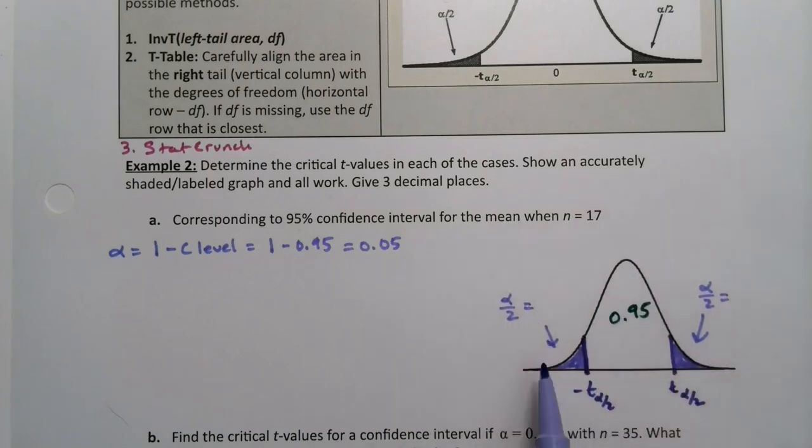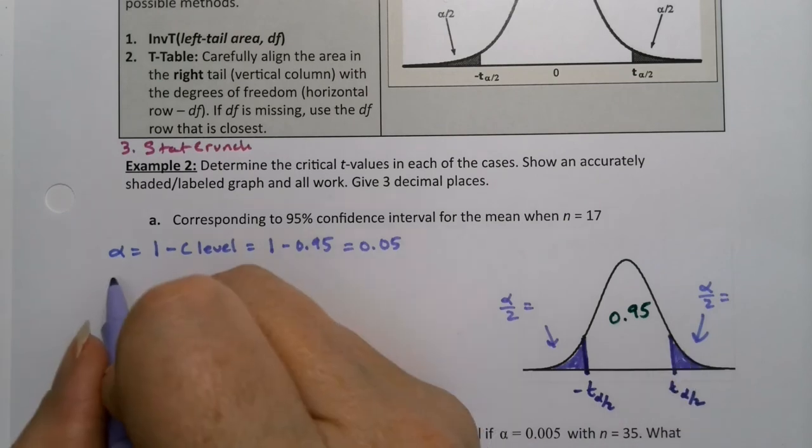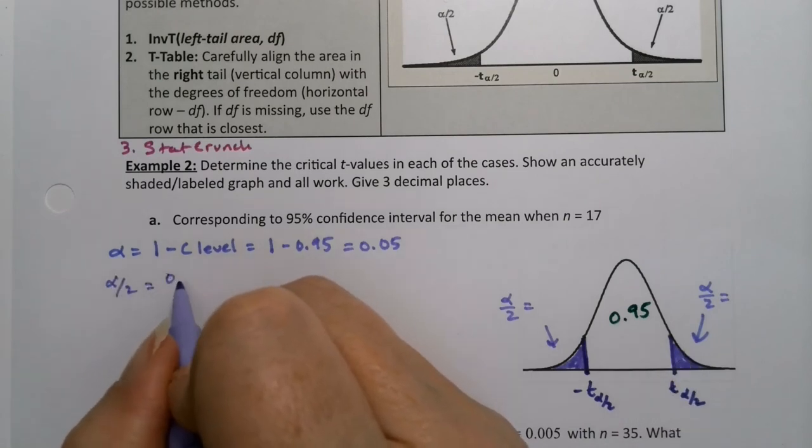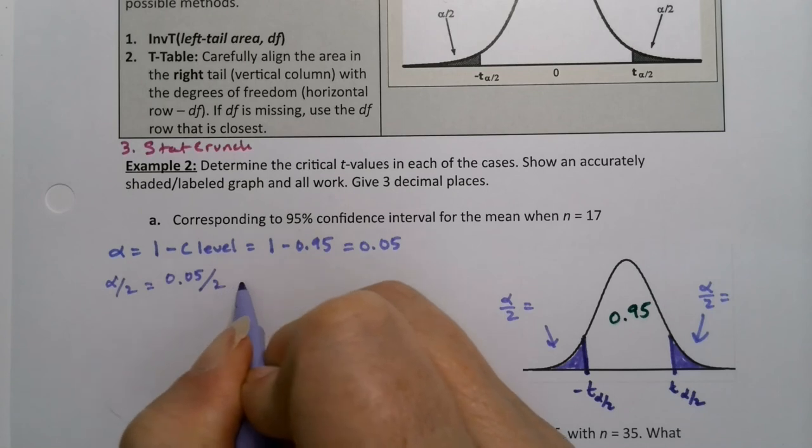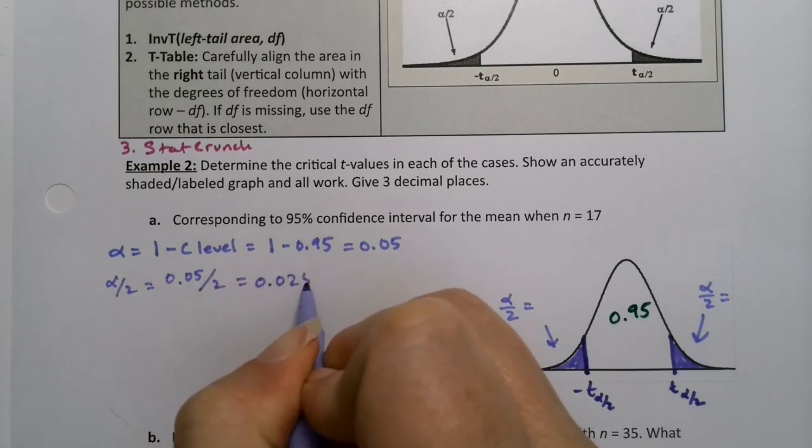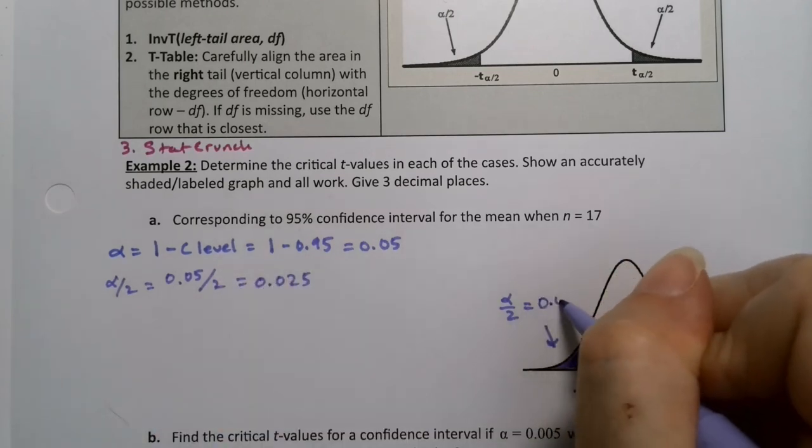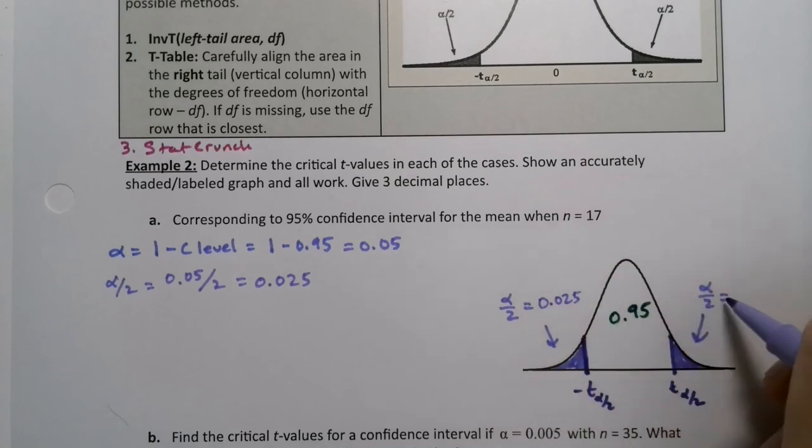I need to know what each tail is on its own. So alpha divided by 2 would be 0.05 divided by 2, which would be 0.025. So that's this piece right here and this piece right here.